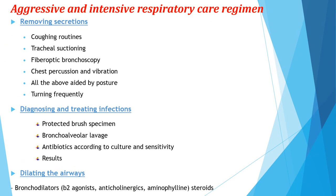Aggressive and intensive respiratory care regime involves removing secretions by coughing routine, tracheal suctioning, fibre-optic bronchoscopy. Turning the patient frequently, added by postures such as percussion and vibration. Diagnosing and treating infection using protective brush specimen, bronchoalveolar lavage, and antibiotics according to culture and sensitivity. Dilating the airway using bronchodilators: beta-2 agonists, anticholinergics, aminophylline, and steroids.